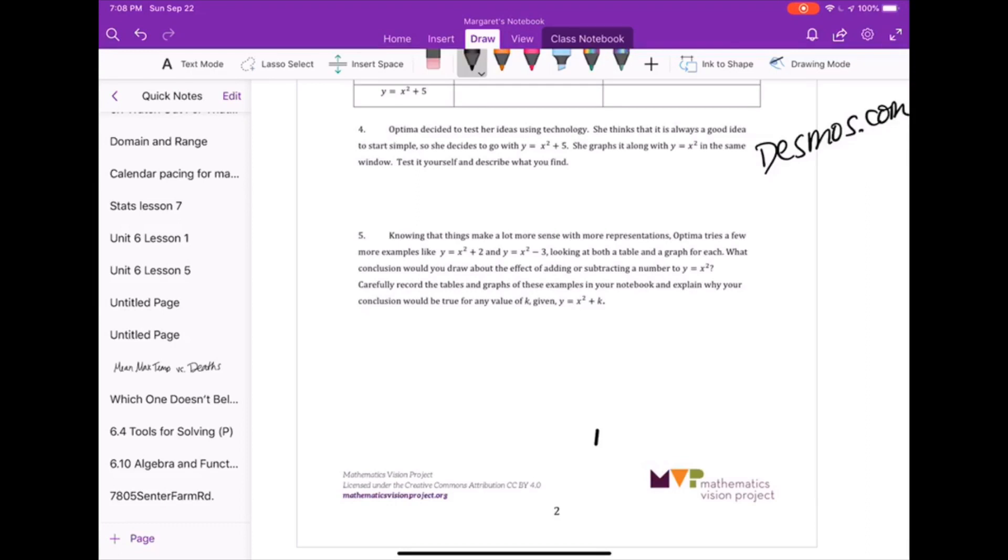Then in number 5, it tells you to go explore these different things. So you'll type in, instead of x squared plus 5, you'll type in x squared plus 2. Then you'll type in x squared plus 3 and describe what you're finding. And then it asks you to look at, make a generalization.